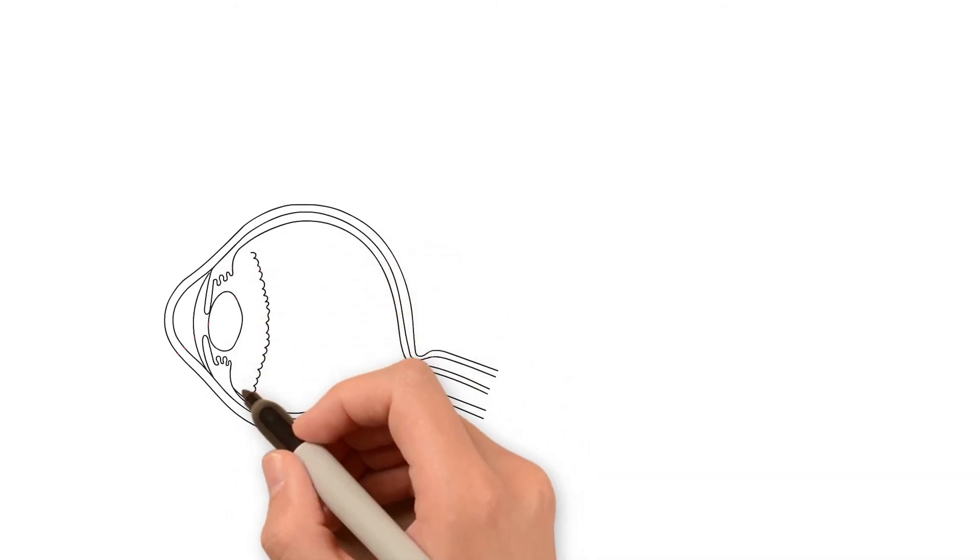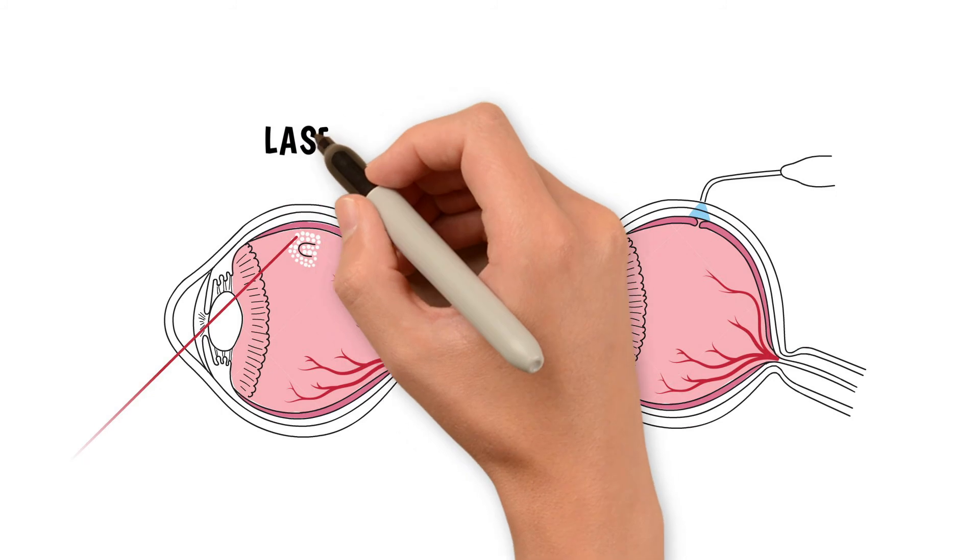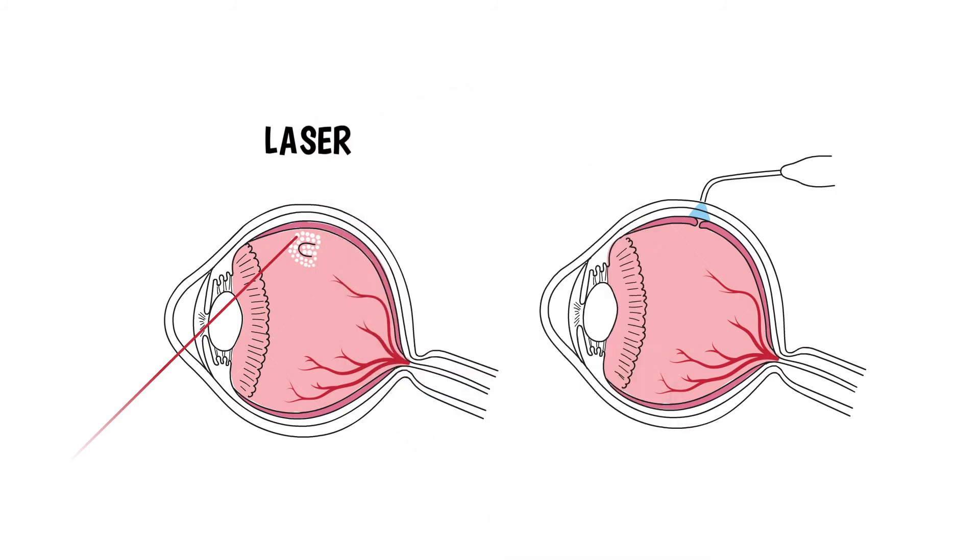Once the retina is attached, your doctor will use a laser to permanently seal the tear. Depending on the nature and size of your retinal tear, your doctor may instead use a freezing technique to permanently seal the tear called cryopexy.